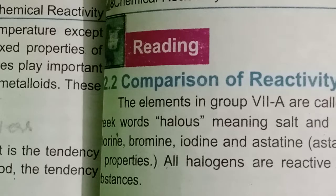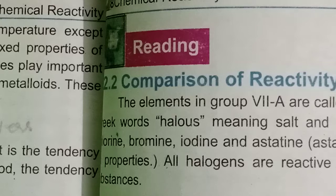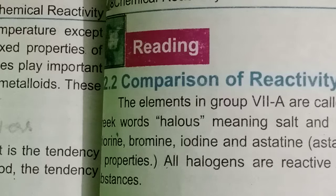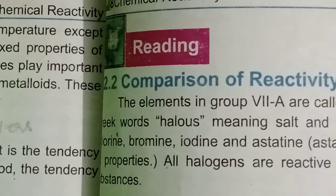Fluorine is a pale yellow gas. Chlorine is a greenish-yellow gas. Bromine is a reddish-brown liquid. Iodine is a bluish-black solid.